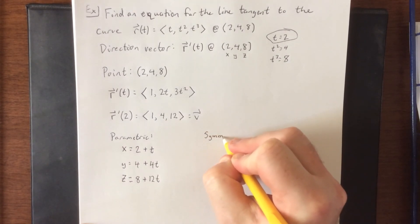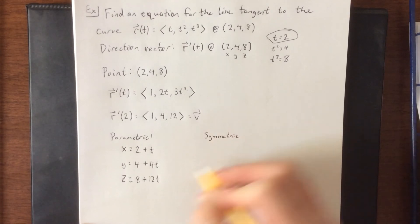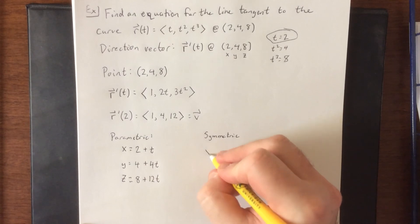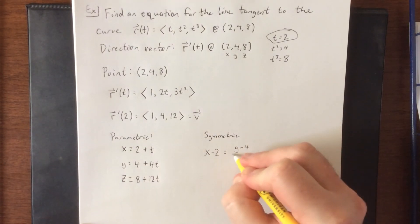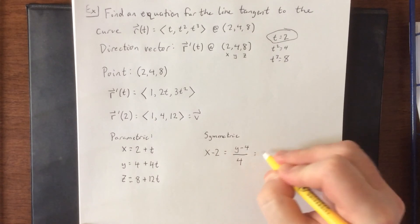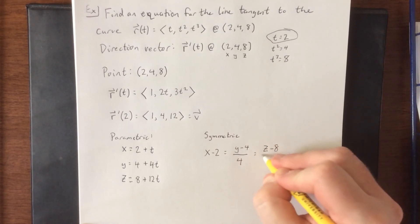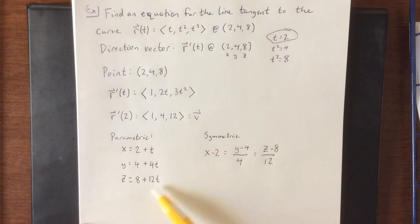In its symmetric form, we would solve each of these for t, and that would be our answer. So that'll be x minus 2 equals y minus 4 over 4, which equals z minus 8 over 12. Again, just solve each of these for t and set them all equal to each other for the symmetric form of our final answer.